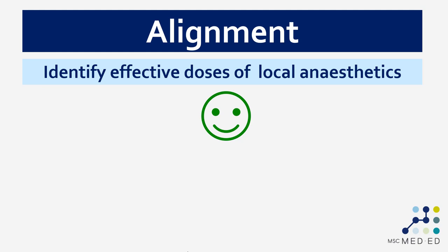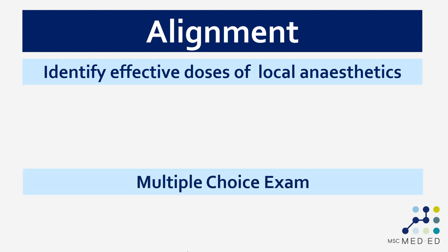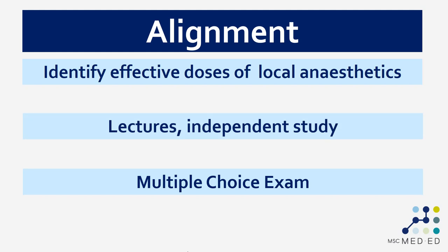What this good learning outcome now allows us to do is identify the assessment and teaching activities that flow from it. 'Identify effective doses of local anesthetics' might be something we measure using a multiple choice exam — it's a factual recall type learning outcome. This means it might be suited to teaching using lectures and independent study using textbooks and other resources. Having identified the learning outcome, the assessment, and the teaching activity, we can see they're all now aligned, and this alignment comes in part from having written a good learning outcome to start with.